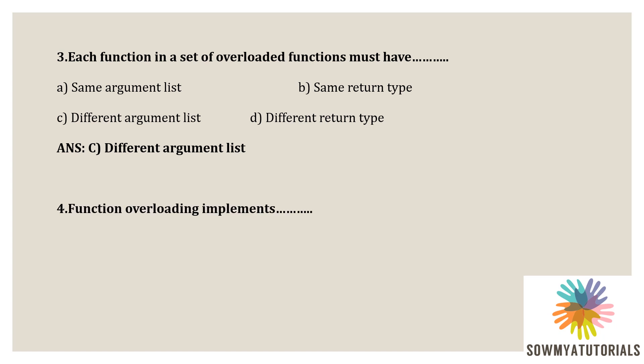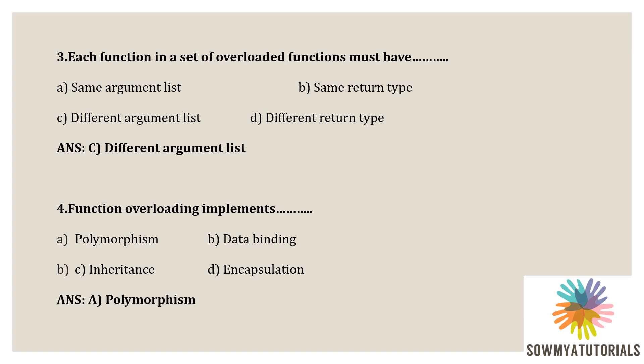Question number four: function overloading implements? Options are: A) polymorphism, B) dynamic data binding, C) inheritance, D) encapsulation. The correct answer is polymorphism. Polymorphism means the ability to create more than one form. There are two different types of polymorphism — one is function overloading and the second is operator overloading. Function overloading implements the polymorphism object-oriented concept, so the correct answer is option A: polymorphism.